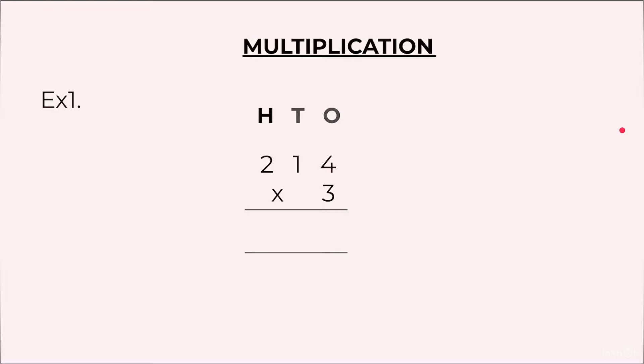You already know multiplication but a quick recap with 2 examples. Example 1: 214 into 3. We will start by multiplying 3 by 4. 3 fours are 12, 1 at the top, 2 at the bottom.